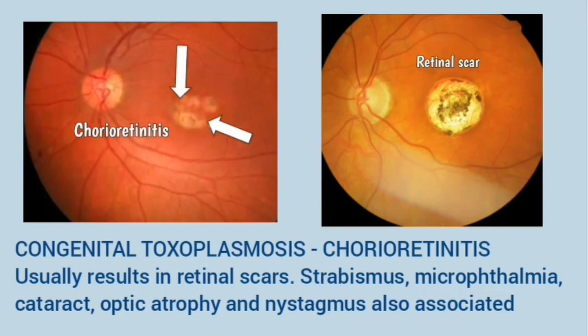These are the fundus images of congenital toxoplasmosis chorioretinitis. This usually results in retinal scars. Strabismus, microphthalmia, cataract, optic atrophy, and nystagmus are also associated with congenital toxoplasmosis.